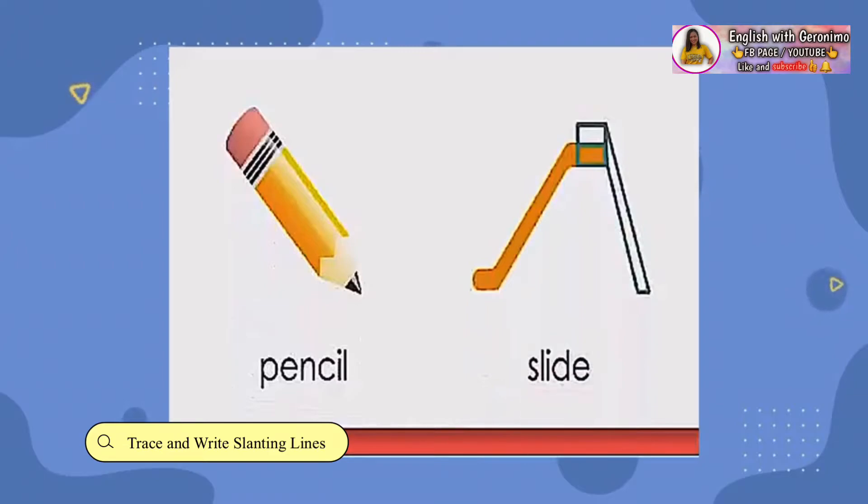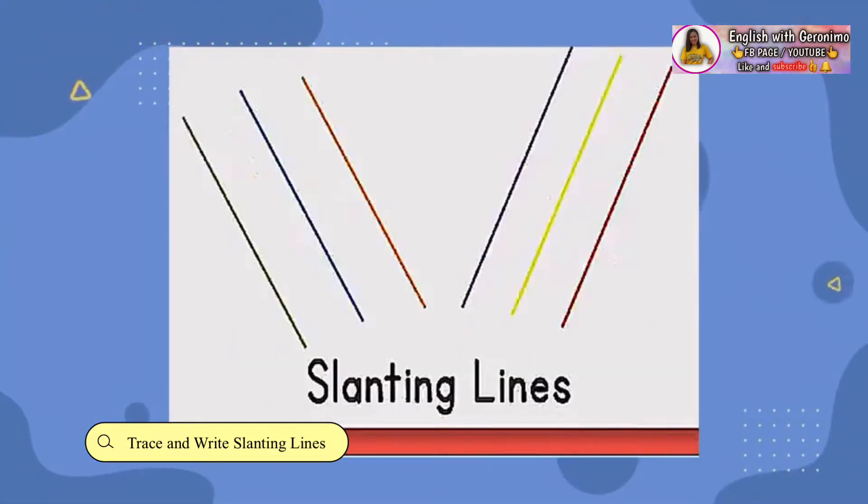Pencil and slide! Good job! They are slanting lines. Slanting lines are lines that are drawn with an angle like a diagonal line.